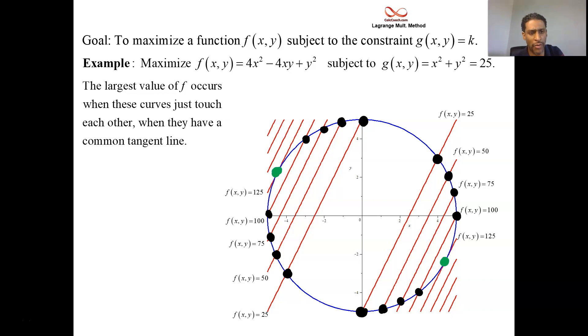The largest value of the function occurs when these curves—what's different about the points labeled in black and the points labeled in green? What's so different about that? Well, it's about how the level curve and the circle interact with each other. And all the points that are labeled in black, the level curve goes through. In green, it goes through as well, but it goes through in a special manner. The tangent line to the level curve and the tangent line to the constraint are exactly the same. They have a common tangent line.